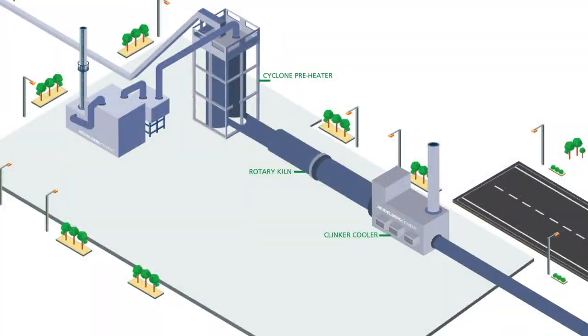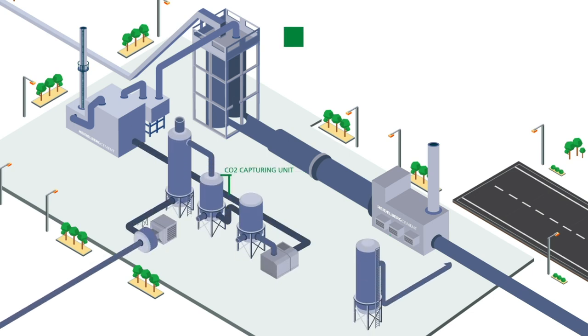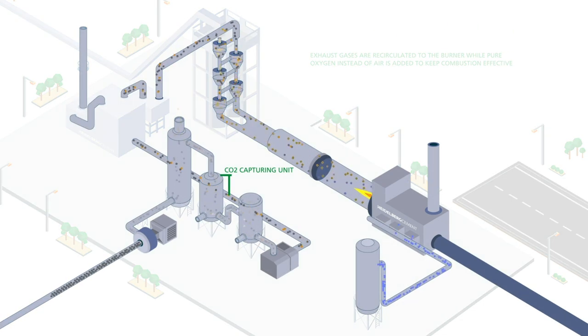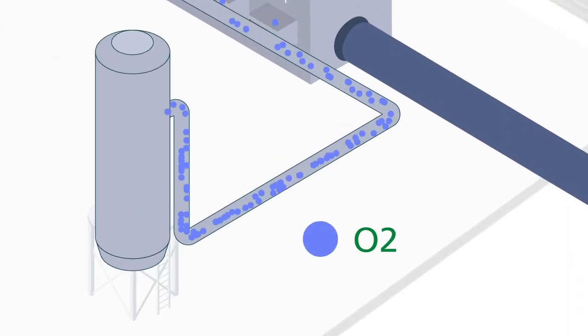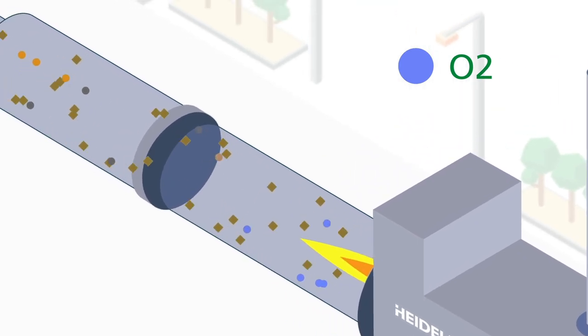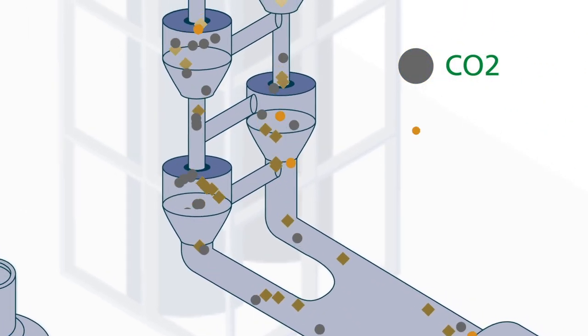A second technology to capture CO2 in cement production is the oxyfuel combustion technology, a process in which combustion occurs in an oxygen enriched environment. In this procedure there is a first step where pure oxygen is added to the process instead of air to improve the combustion. The exhaust gases are recirculated to the burner.